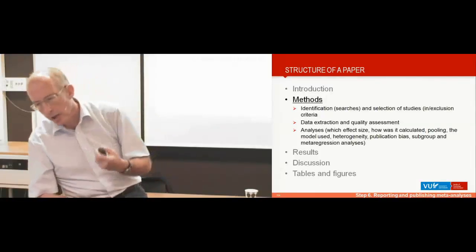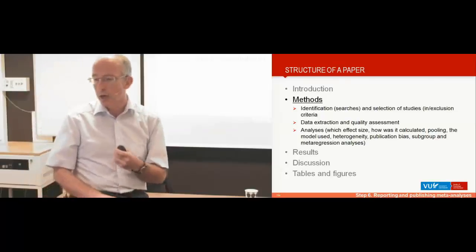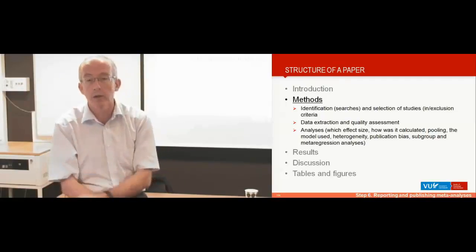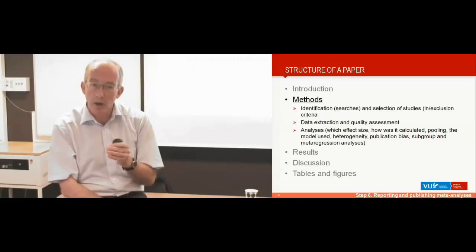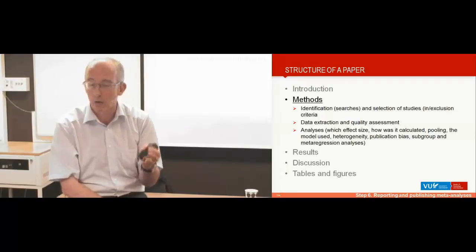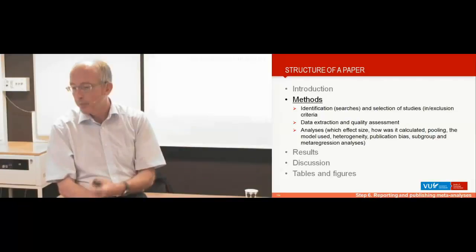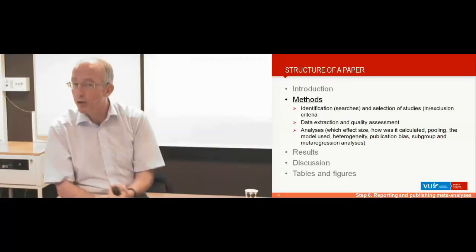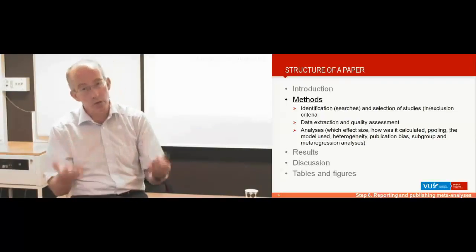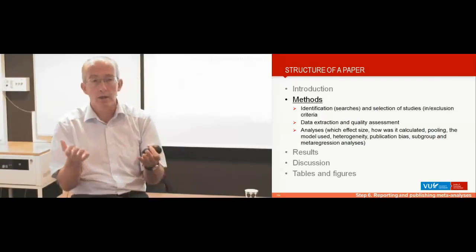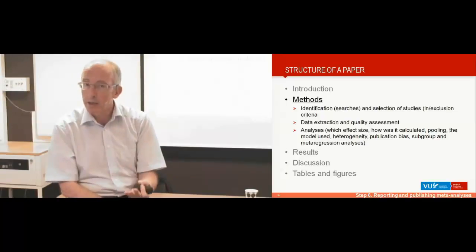Then the methods. You have to explain how you identified the searches. So you have to give a full search string for one of the databases. That's a requirement of the PRISMA statement. And you have to indicate the inclusion and exclusion criteria as specifically as possible. Then you describe the data extraction and the quality assessment, or the risk of bias assessment. How did you do that? Were there two different? Did you use the Cochrane risk of bias assessment tool, or did you decide for another method? Was it done by two independent researchers?